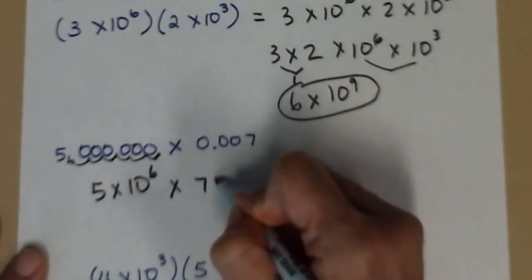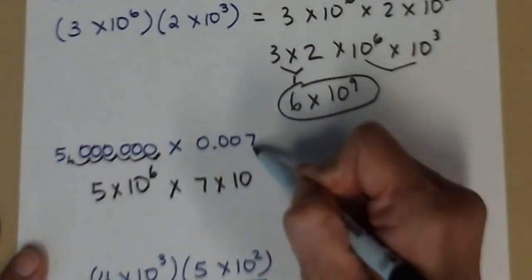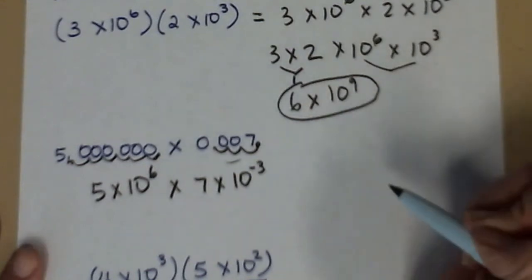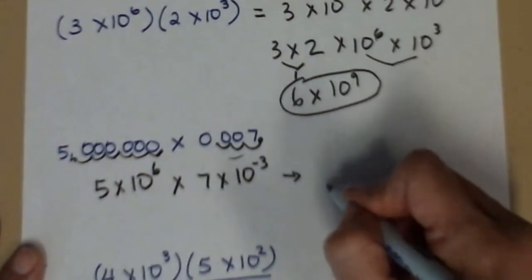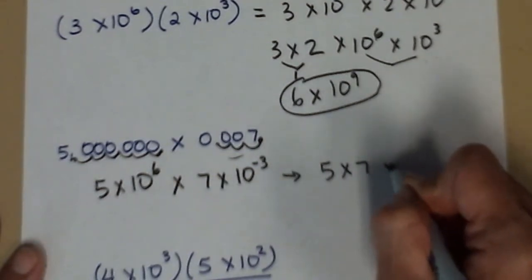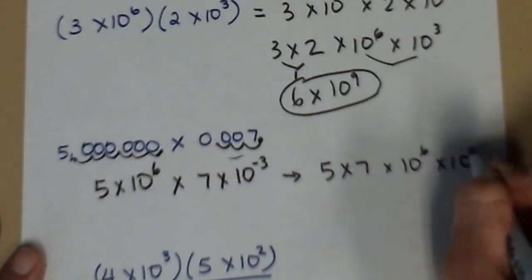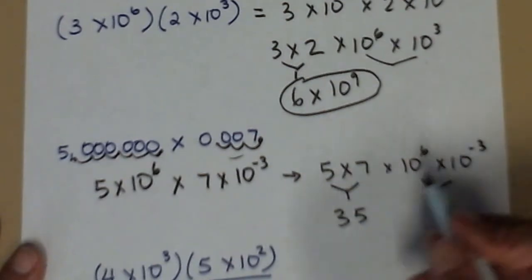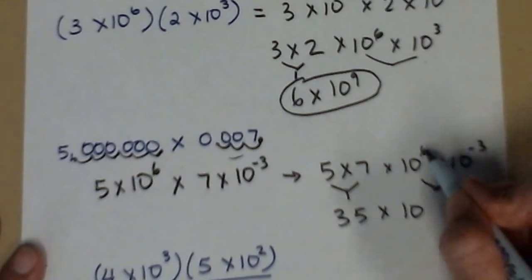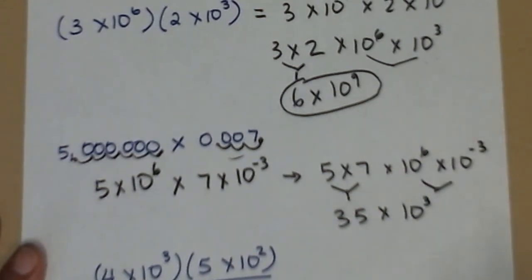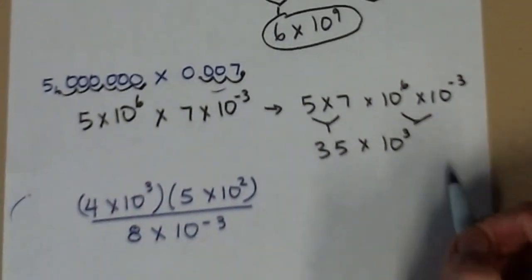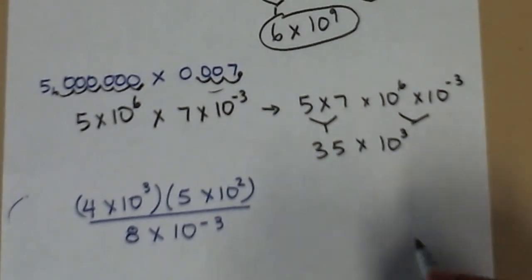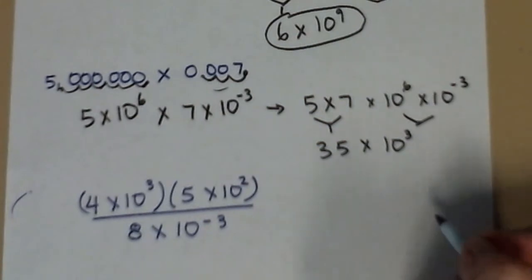Times, over here, 7 times 10 to the, it's a number less than 1, so it'll be negative: 1, 2, 3. Switch up your orders. 5 times 7 times 10 to the 6 times 10 to the negative 3. These guys are 35. These two, multiplying like bases, will add the exponents. 6 plus a negative 3 will be 3. Okay, so 35 times 10 to the 3, which is pretty good, but not in scientific notation. So let's say our teacher really wants our final answer to be in scientific notation.